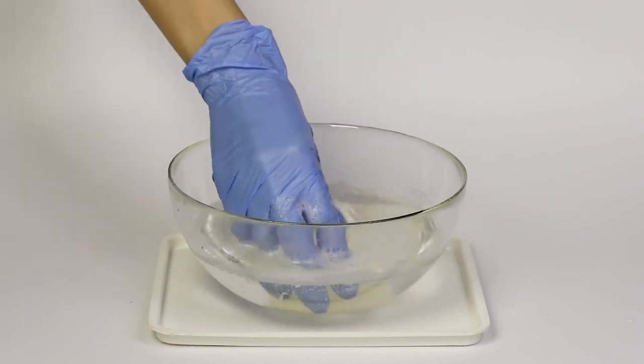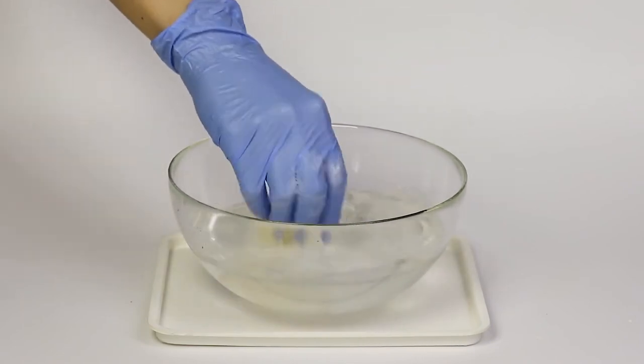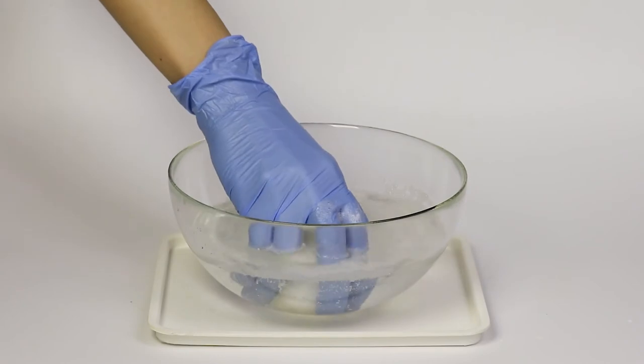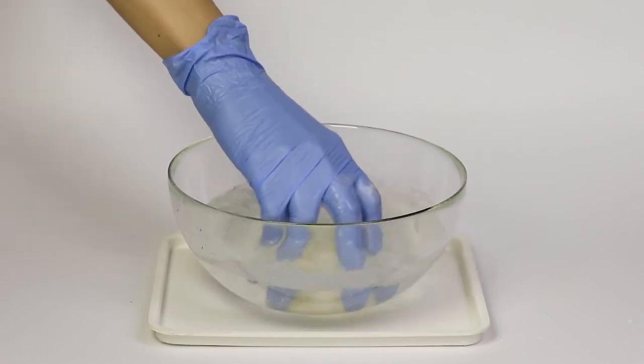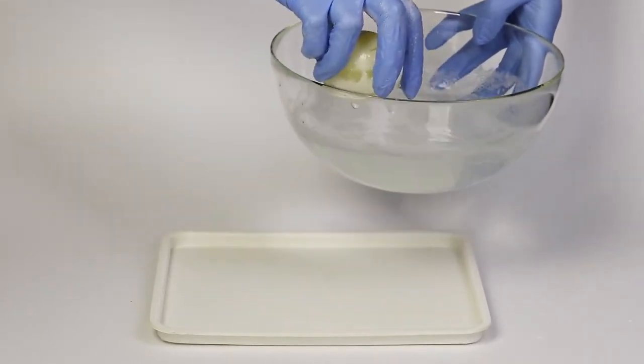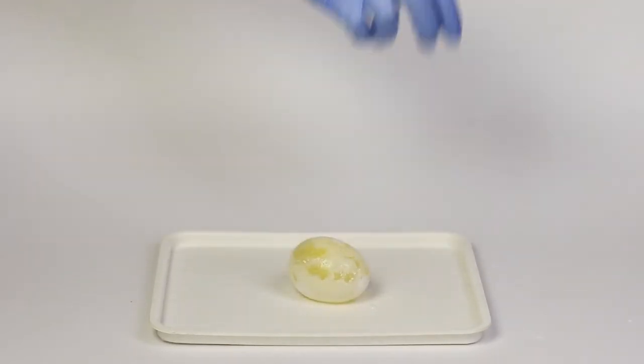An eggshell is made mostly of calcium carbonate. The acetic acid in the vinegar reacts with the calcium carbonate and dissolves it. This reaction also produces carbon, which appears in the form of bubbles on the surface of the eggshell.